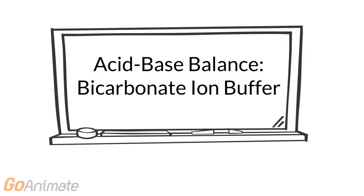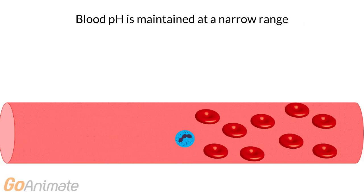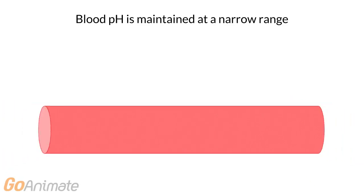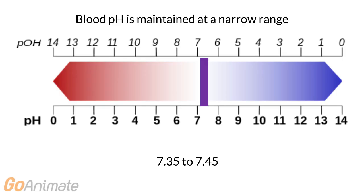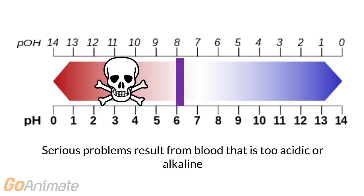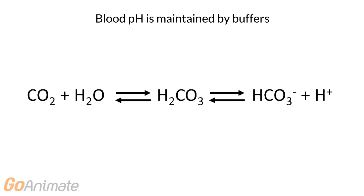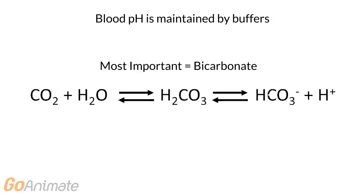Let's learn about the Bicarbonate Buffer System. Blood is maintained at a narrow range of pH, which is between 7.35 and 7.45. Serious problems result from blood that is too acidic or alkaline — abnormal pH can lead to coma and death. One of the ways by which the body maintains the blood pH is through buffers. The most important buffer in the blood is the bicarbonate ion buffer.